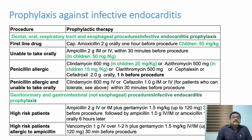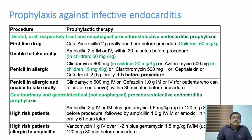For dental, respiratory tract, and esophageal procedures, cover gram-positive organisms: Amoxicillin 2 g orally 1 hour before procedure, or Ampicillin 2 g IM/IV within 30 minutes before procedure. For penicillin allergy: Clindamycin 600 mg, Azithromycin 500 mg, Clarithromycin 500 mg, or Cephalexin 2 g one hour before procedure. If penicillin-allergic and unable to take orally: Clindamycin 600 mg or Cephalexin 1 g IV. Above the diaphragm, gram-positive coverage is given.